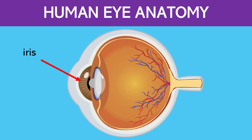Here is the iris. It is the colored part of the eye that controls the size of the pupil. By adjusting the pupil size, the iris regulates the amount of light that enters the eye.